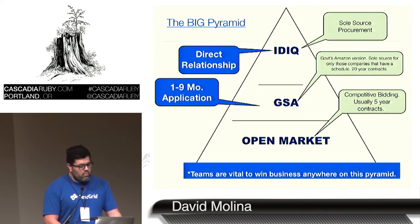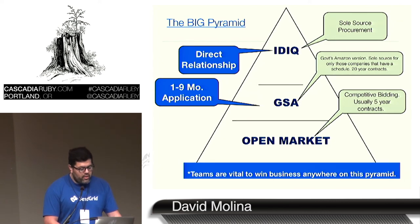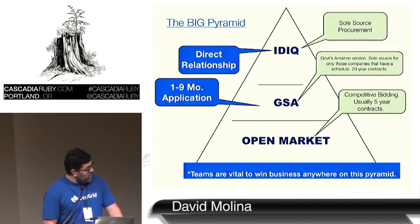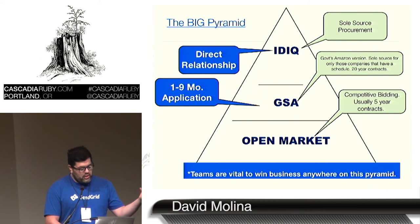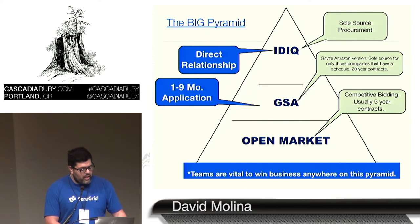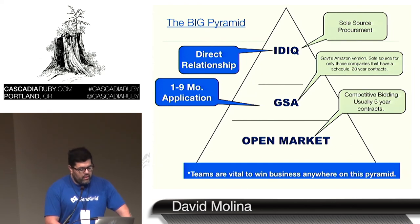This is really how it works. The bigger pyramid is this: they can sole-source procure you a lot of dollars — that's the very top, direct relationships, think Lockheed Martin. Next step is the GSA — you can get a GSA schedule. There's a one- to nine-month application process. This is like the government's version of Amazon.